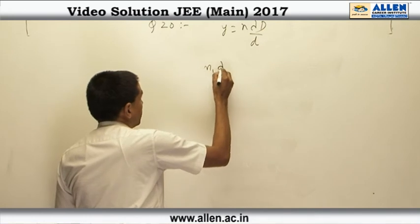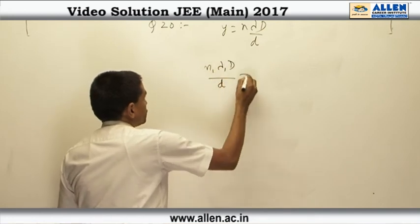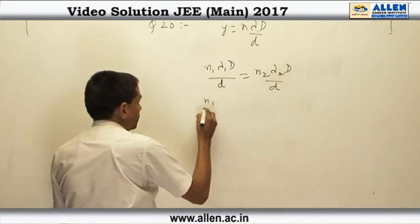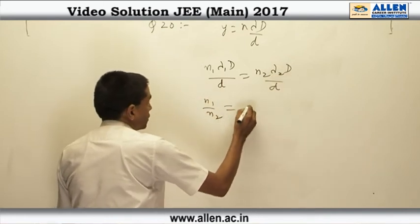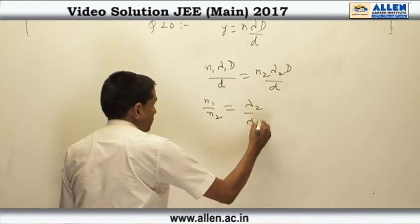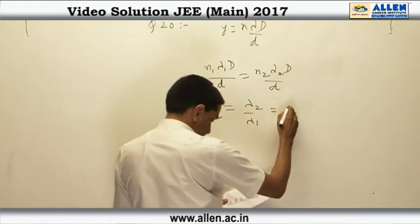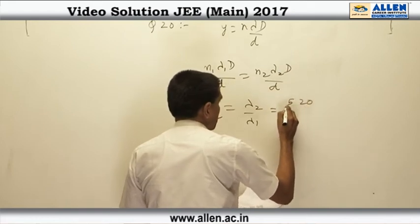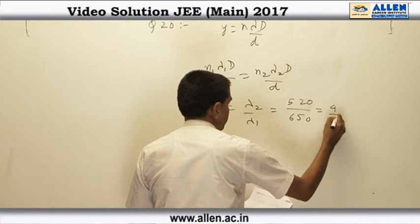That means n₁λ₁D by d should be equal to n₂λ₂D by d. From this I can say n₁ by n₂ is equal to λ₂ by λ₁, which comes out to be 520 upon 650, which is 4 by 5.